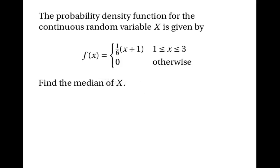Let's look at some examples. You might be given the probability density function for a continuous random variable and asked to find the median. But in order to find the median we need to solve an equation involving the cumulative distribution function, not the probability density function. So the first thing to do is to convert the probability density function into a cumulative distribution function. There are various ways of doing this and you might like to have a go before continuing with the video.